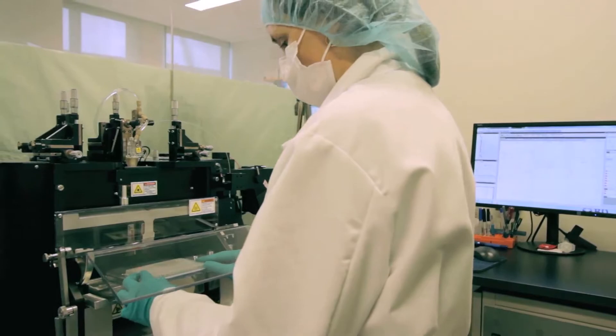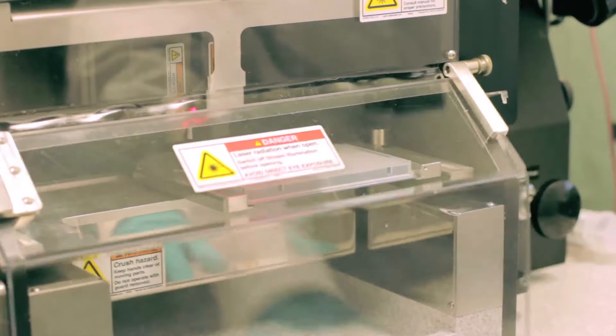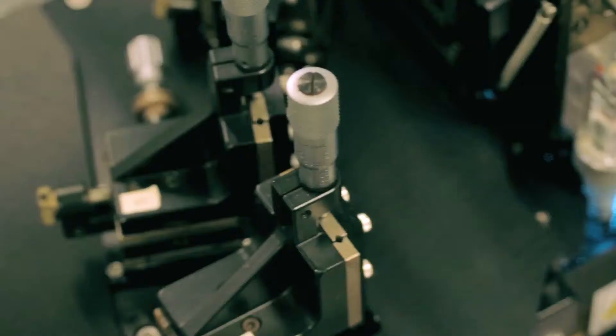At SCGC, we use a fluorescence-activated cell sorter to separate microbial cells one by one into plastic microplates, each containing 384 wells. This is a highly sophisticated, automated instrument that can complete the process in a matter of a few minutes.